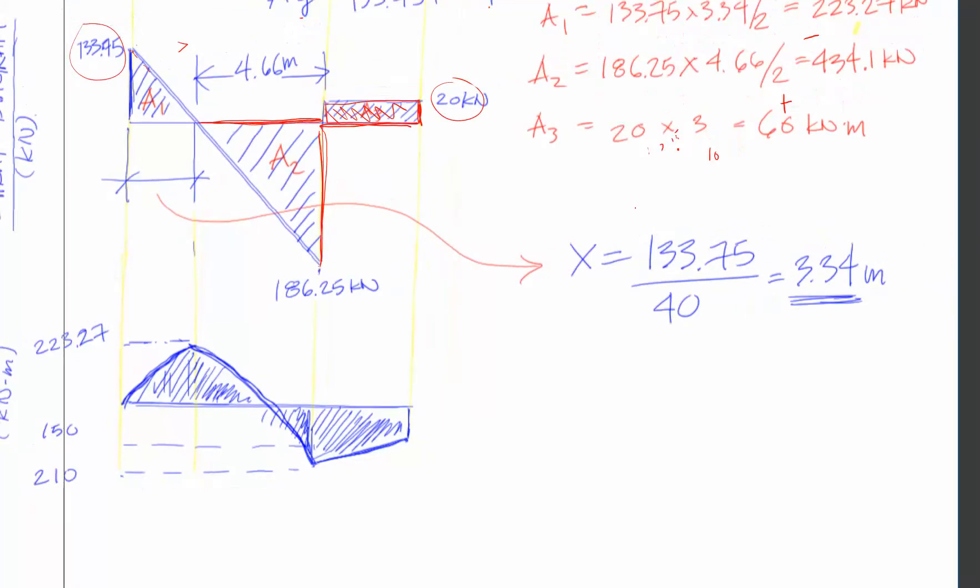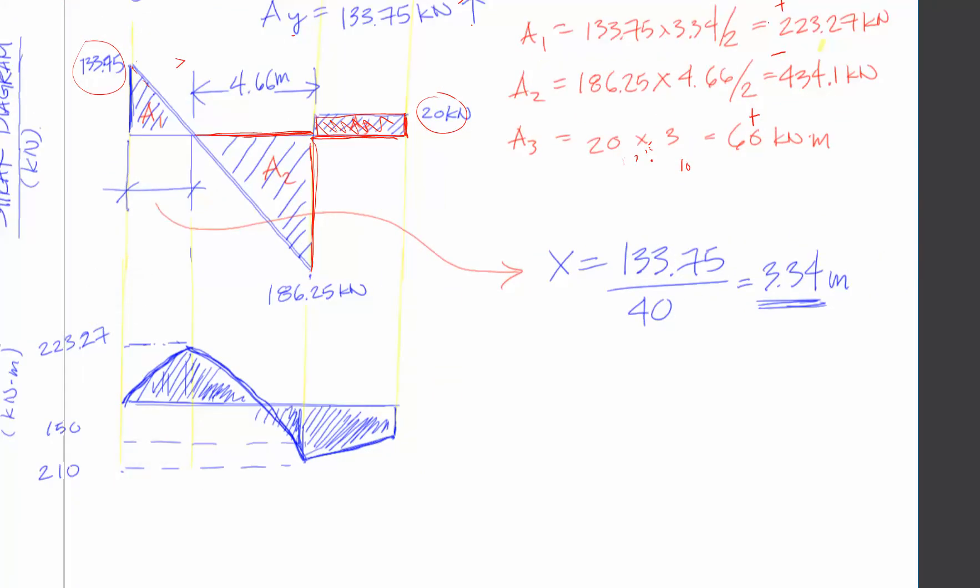We got 223. We know that from that table, if it's a slope line, it translates to parabolic. We know that it's positive, 223.27, so you'll go up and travel up.